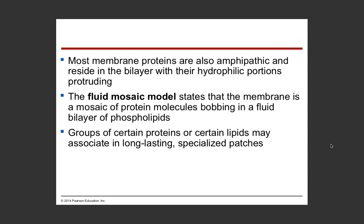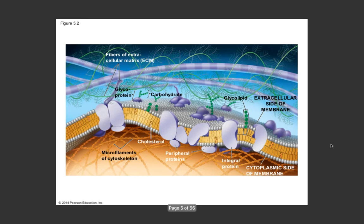Our membrane proteins are also amphipathic. The ones that span the entire membrane have to have both hydrophilic and hydrophobic regions. The hydrophilic portion is what protrudes or extends beyond the internal side because the outermost and innermost parts interact with water, whereas the middle section - like those yellow hydrocarbon tails - is all hydrophobic because it's not interacting with water. Both our phospholipids and proteins are amphipathic, meaning they have hydrophobic and hydrophilic regions within the same molecule.